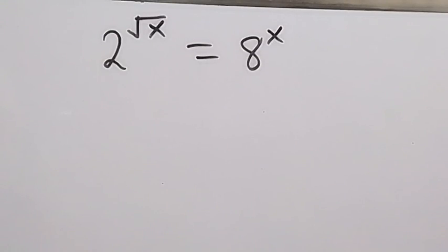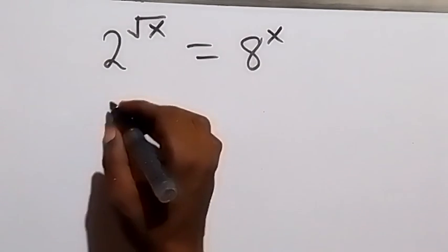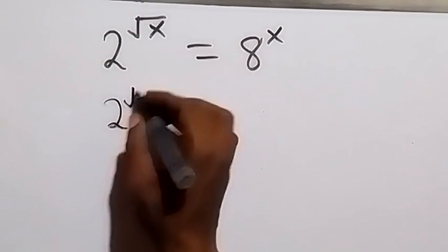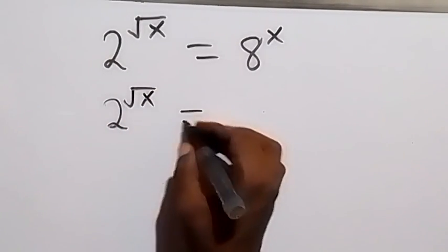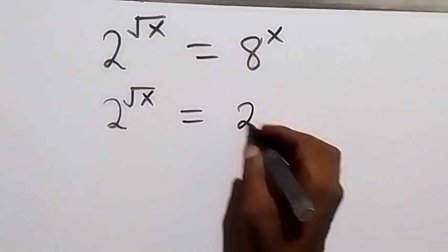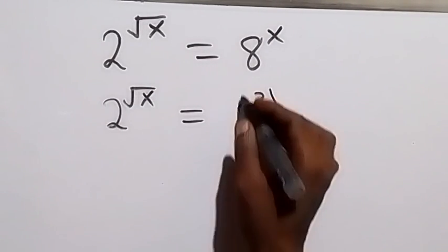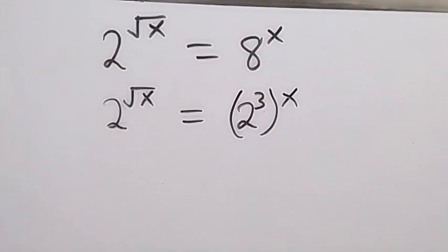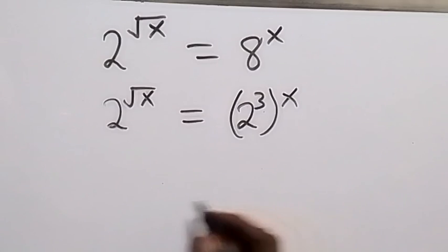Hello, you are welcome. How to solve this nice algebra problem. From here we can write this again as 2 raised to power root x equals to... it can be expressed as 2 as well, and we have 2 raised to power 3 then raised to power x. From here this power multiplies and this becomes 2 raised to power root x equals to 2 raised to power 3x.